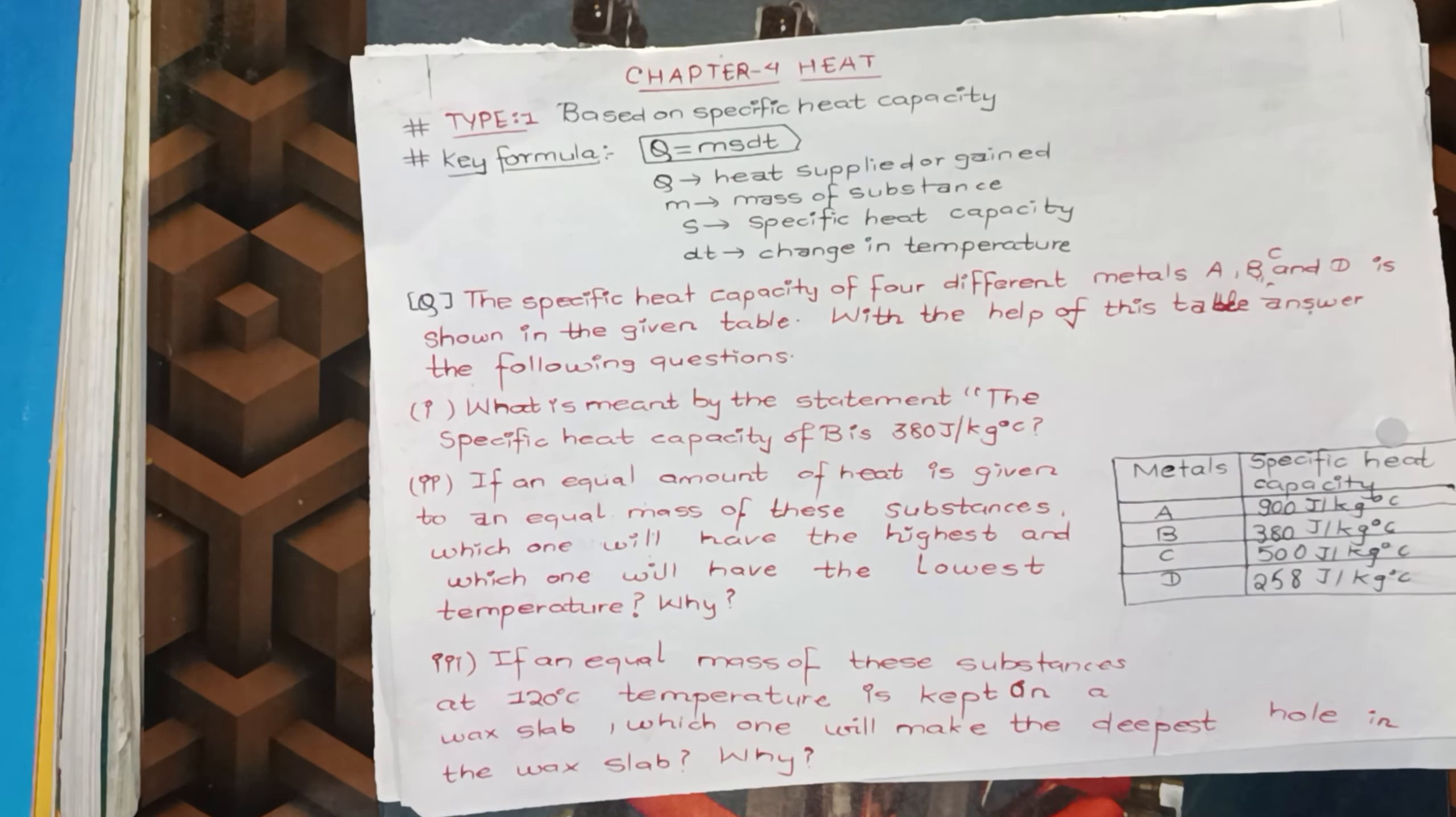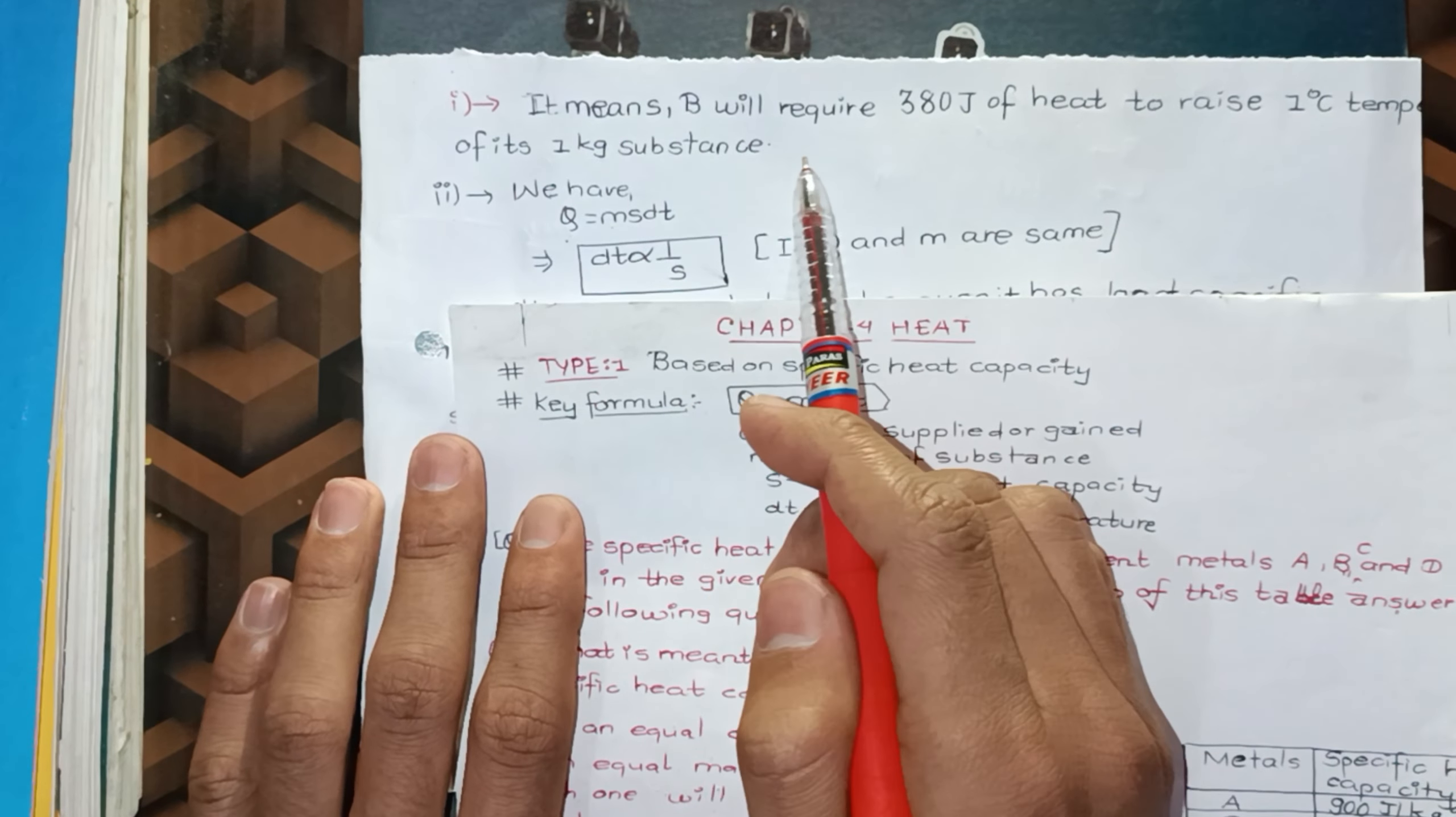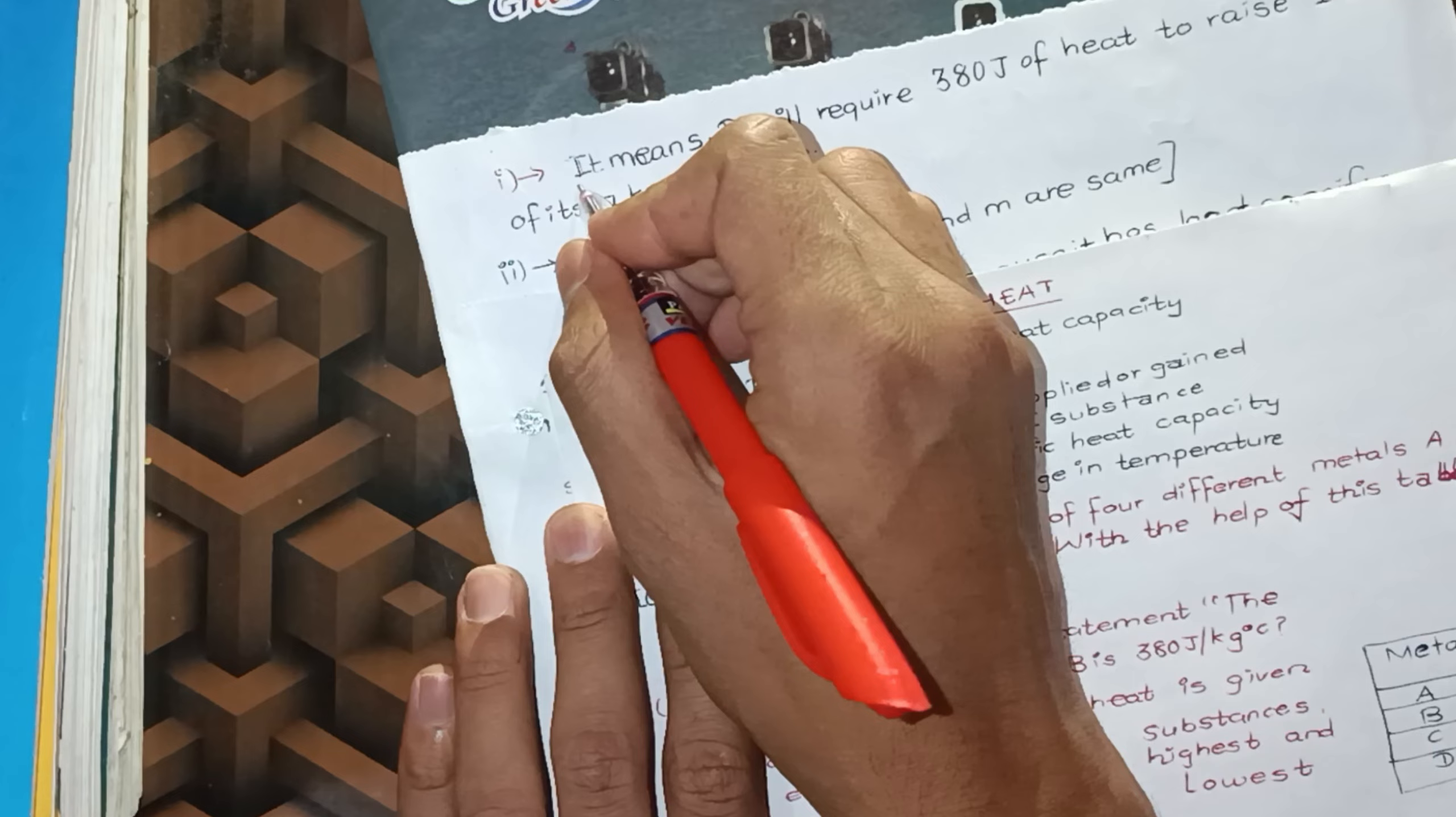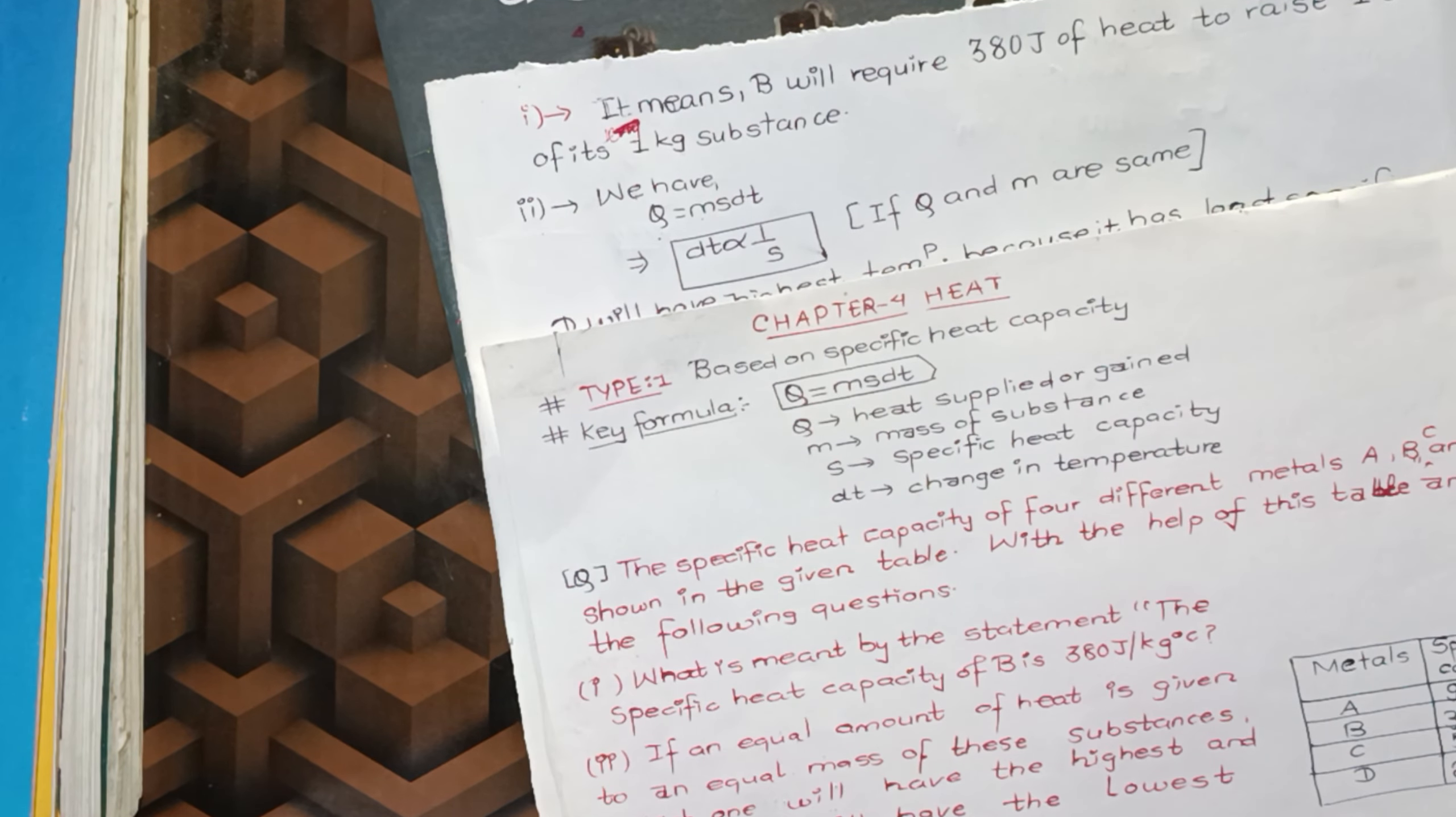It depends on the nature of the material. So now, what is the answer? It means B will require 380 joules of heat to raise 1 degree celsius of its temperature, temperature of its 1 kg substance.